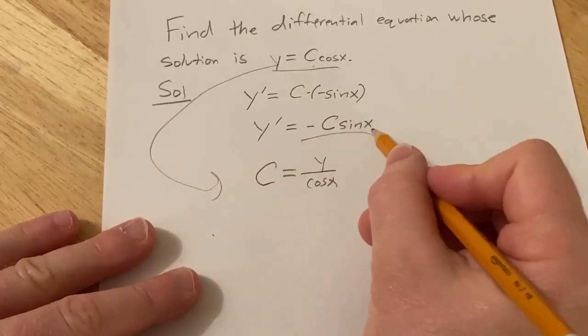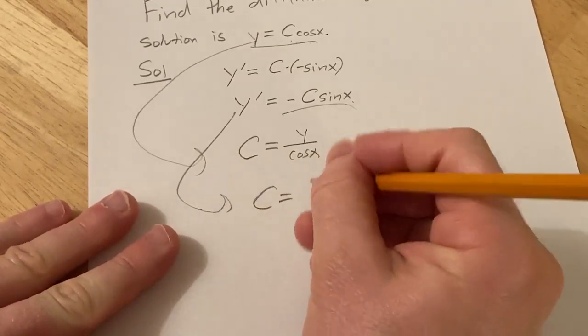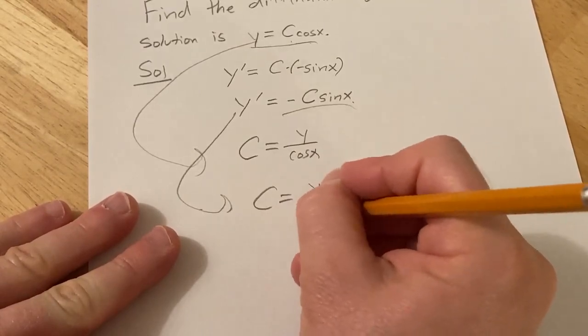We solve this one for C we basically divide by negative sine. So from this one we get C equals y prime over negative sine x.